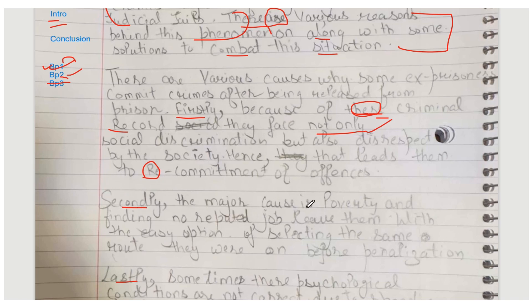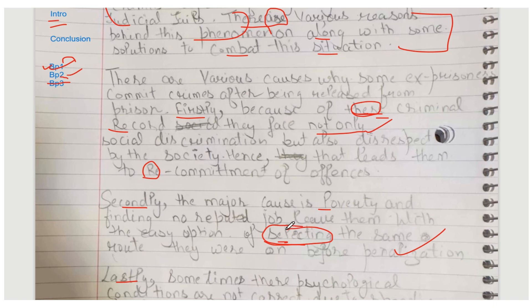Secondly, the major cause is poverty — 'poverty' starts with lowercase 'p'. Finding no — you wrote about jobs here — non-appreciative jobs leave them with the easy option of selecting the same route they were on before being penalized. The point is fine but there is confusion in your word choice — 'selecting' — your letter 'l' is not legible at all.